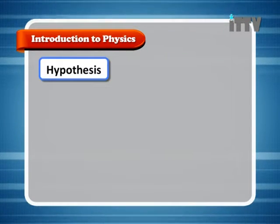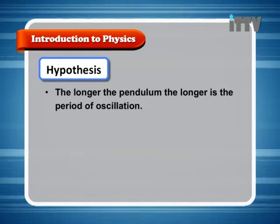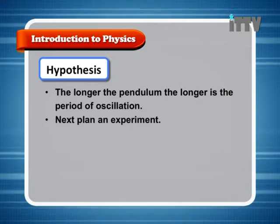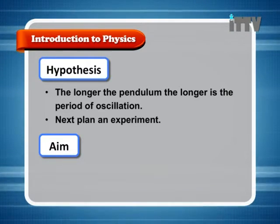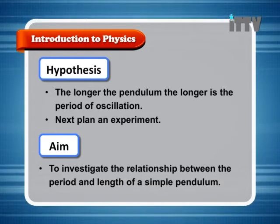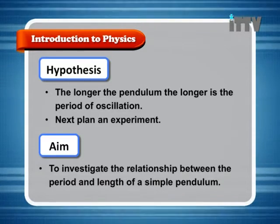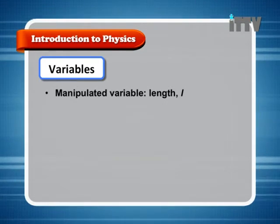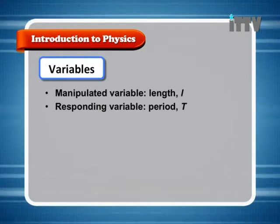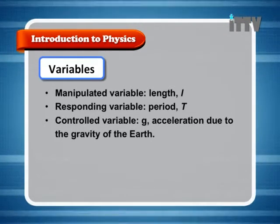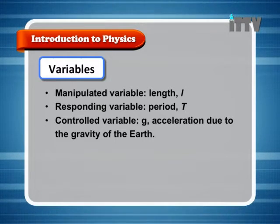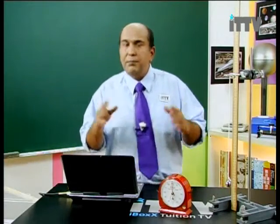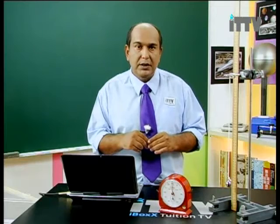The hypothesis: the longer the pendulum, the longer the period of oscillation. We plan an experiment. Aim: to investigate the relationship between the period and the length of a simple pendulum. Variables: the manipulated variable is the length of the pendulum; the responding variable is the period; and the control variable is G, the acceleration due to gravity of the earth. We have our aim and our manipulated, responding, and controlled variables.